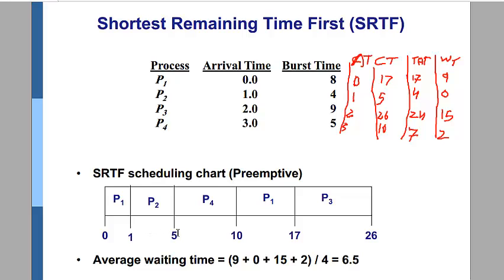So we consider P2, and P2 will run from 1 to 5. At time 5, all processes are in the processing queue. We compare all processes and P4 has priority, so P4 will run from 5 to 10.